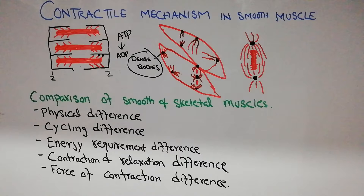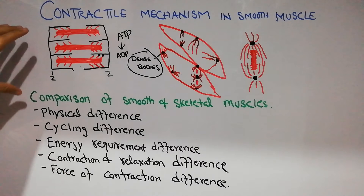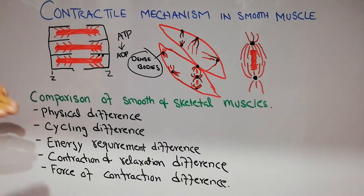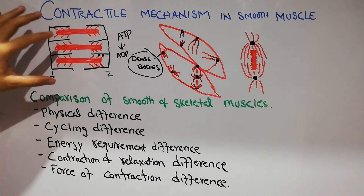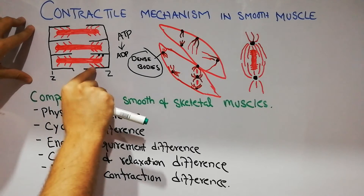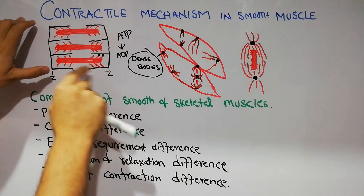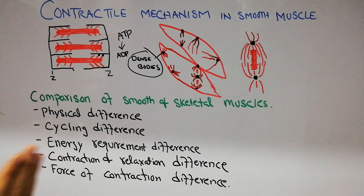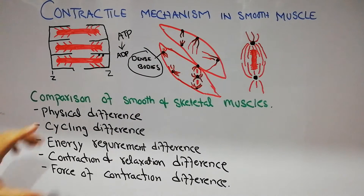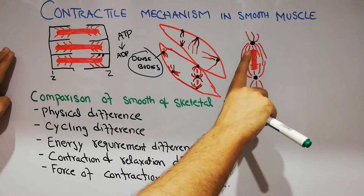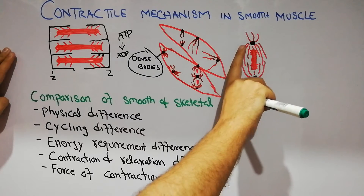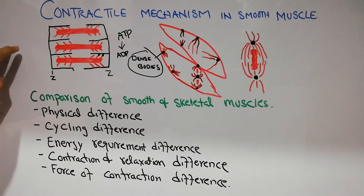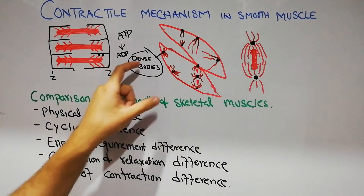First we will discuss the difference in physical appearance. In skeletal muscles, myosin filaments are surrounded by actin filaments, which interact via cross bridges. The actin filaments move between two Z lines, and the distance between two Z lines is known as the sarcomere. When the cross bridge heads of myosin move, the Z lines move and the sarcomere shortens, causing contraction. In smooth muscles the arrangement is slightly different — a myosin is surrounded by actin filaments, but these actin filaments arise from a protein known as dense bodies.